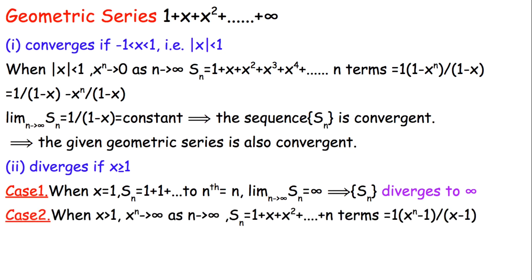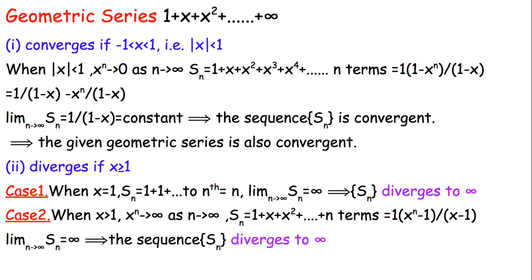In Case 2, when x is greater than one, Sₙ = 1 + x + x² + ... = (xⁿ - 1) / (x - 1). Taking the limit as n approaches infinity, xⁿ approaches infinity, so the numerator becomes infinite. Thus Sₙ diverges to infinity, and therefore the given series also diverges to infinity.